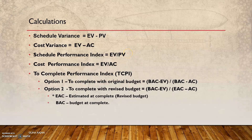When the Schedule Performance Index equals one, the project is on track. SPI is EV divided by PV. If you plan to make one table per day and you actually make one table, there is no schedule variance and no cost variance. For example, if the planned cost is $100 and the earned value is also $100, then $100 divided by $100 equals one — the SPI and CPI are both one, indicating on-track performance.